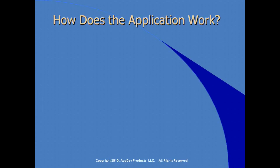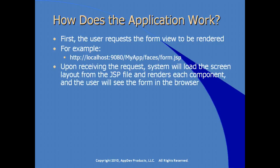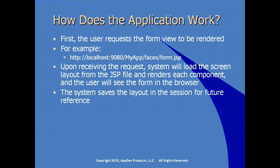How does this application work? First, the user requests the form view to be rendered — in our case, input-form.jsp. Upon receiving the request, the system loads the screen layout from the JSP file and renders each component. The user sees the form in the browser and can begin interacting with it. The system saves the layout of this form for future reference — if the user clicks back or forward, the system has saved the form layout in session.